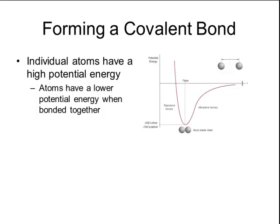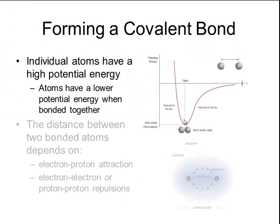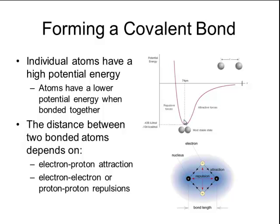Over to the right is a potential energy diagram for individual atoms. You can see that the atoms off to the right have a high amount of potential energy, represented by the purple line. As those atoms combine together and become closer to each other, the amount of potential energy drops. The distance between those two bonded atoms depends on the electron-proton attraction as well as the electron-electron repulsions and the proton-proton repulsions.